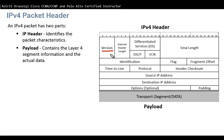First, we have the Version field. The Version field identifies what version of IP is being used — is it IPv4 or IPv6? It's a 4-bit binary value. Since it's IPv4, we put 0100, which indicates IPv4. If it were IPv6, that value would be 0110.